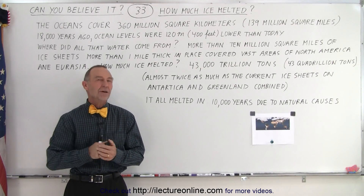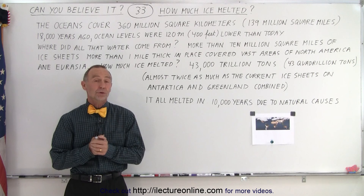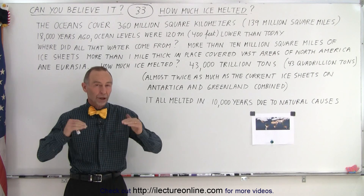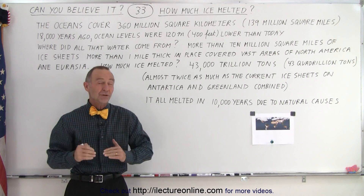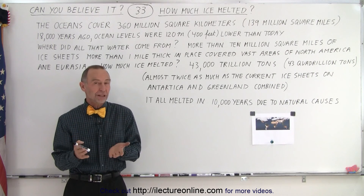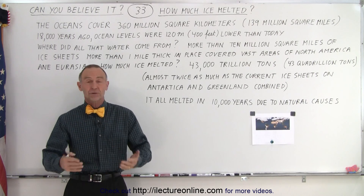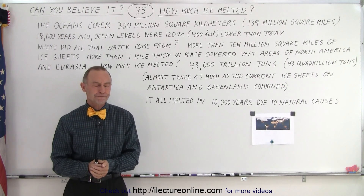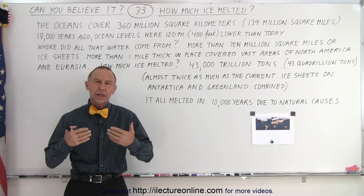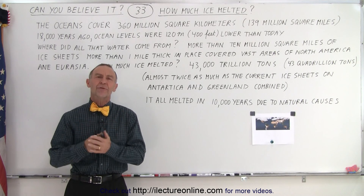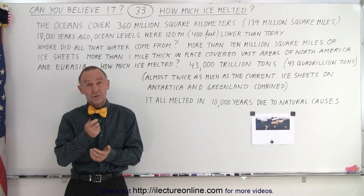We know that 18,000 years ago the ocean levels were 120 meters — about 400 feet — lower than they are today. So where did all that water come from?